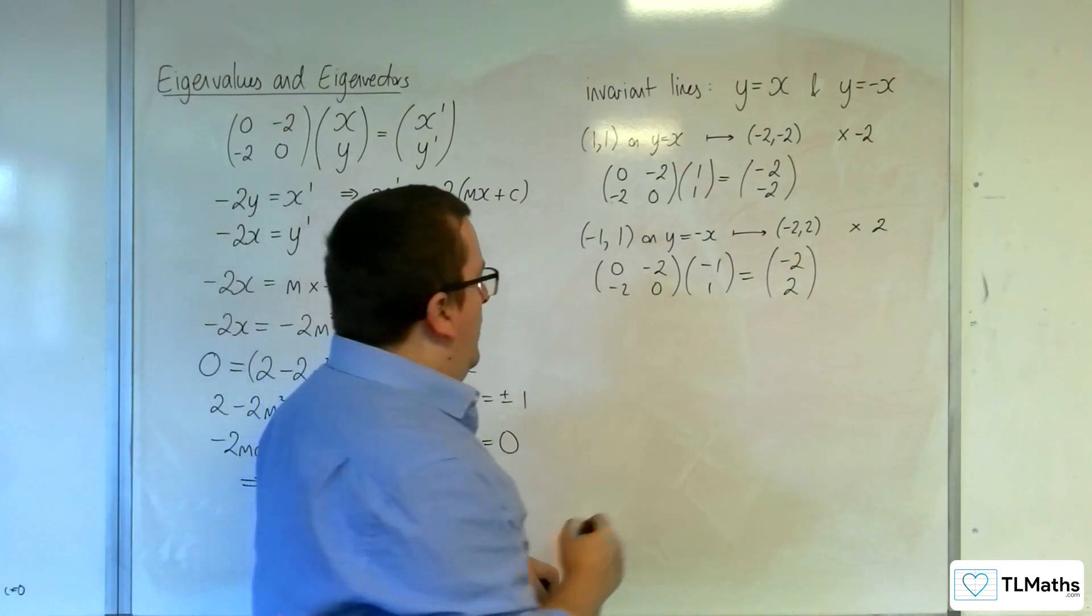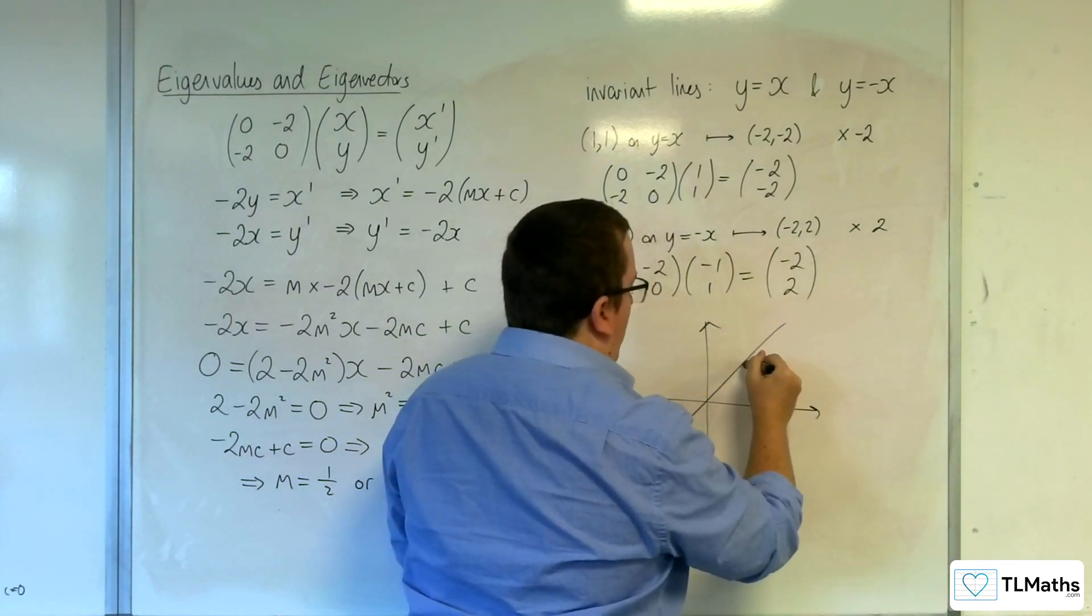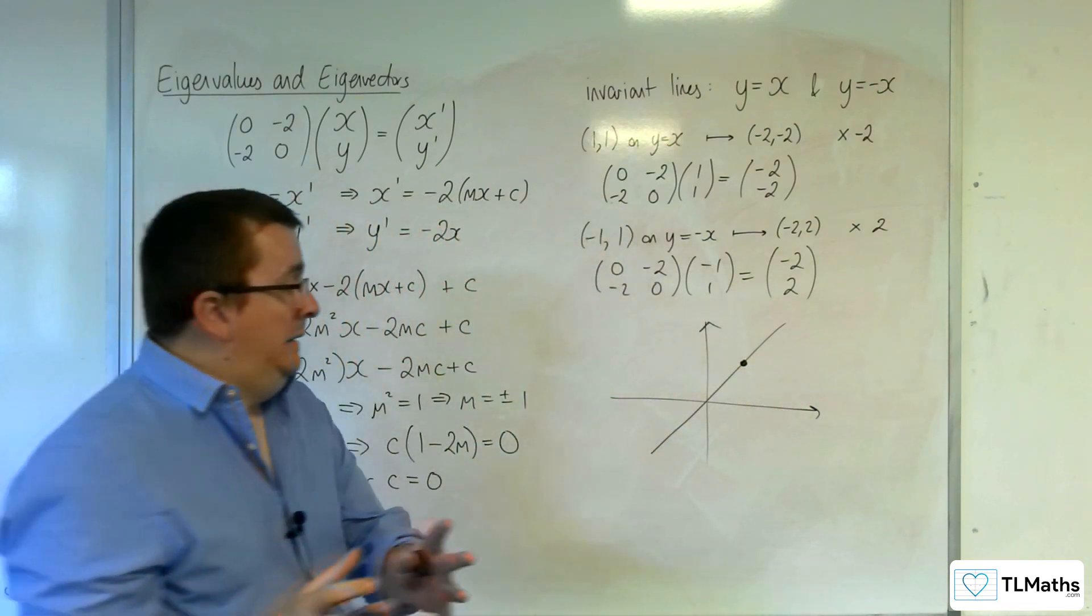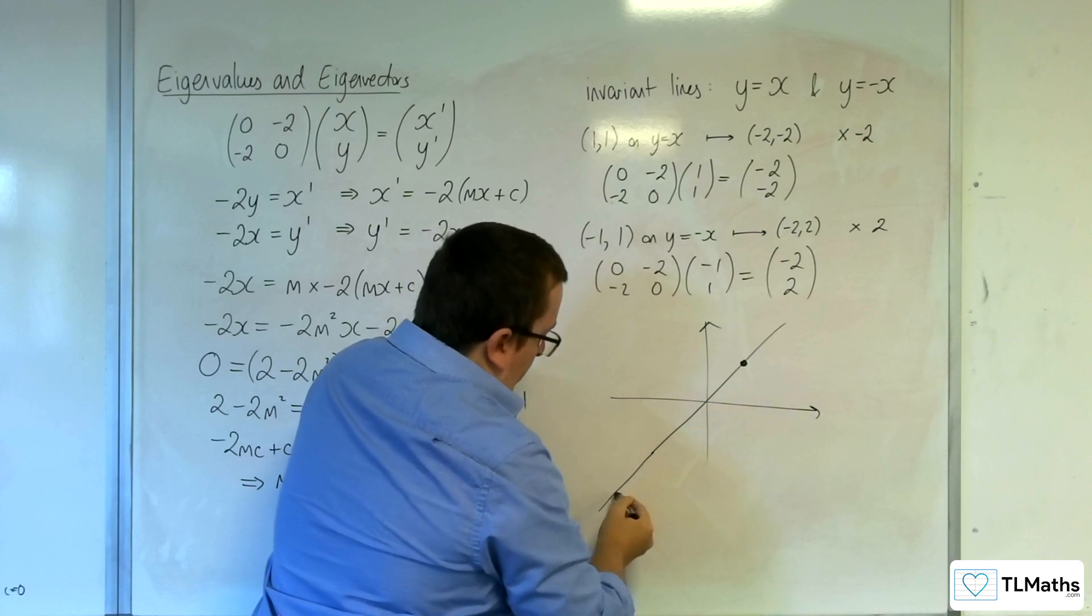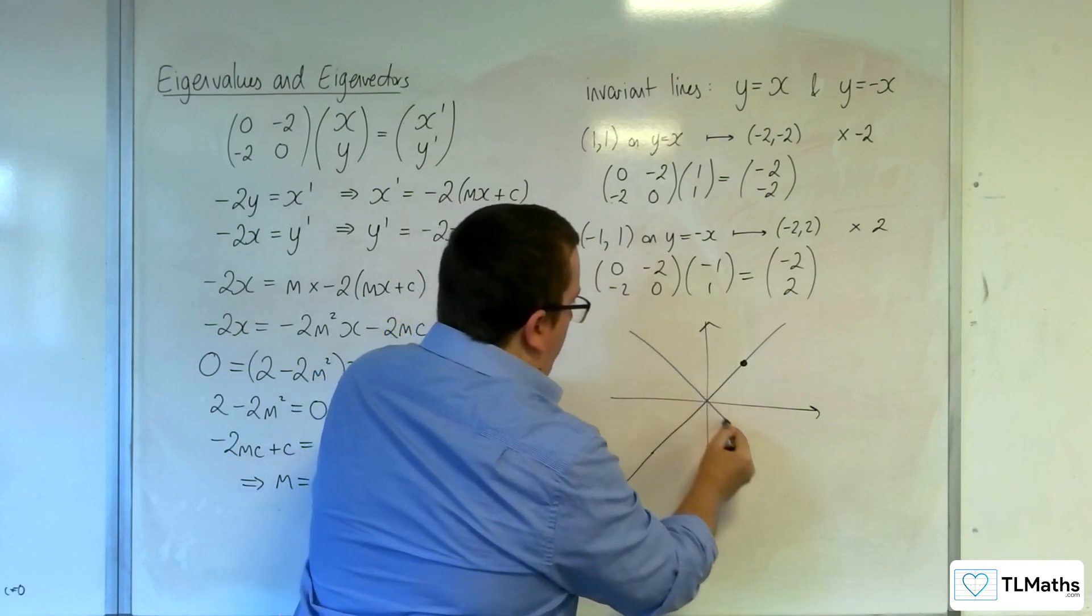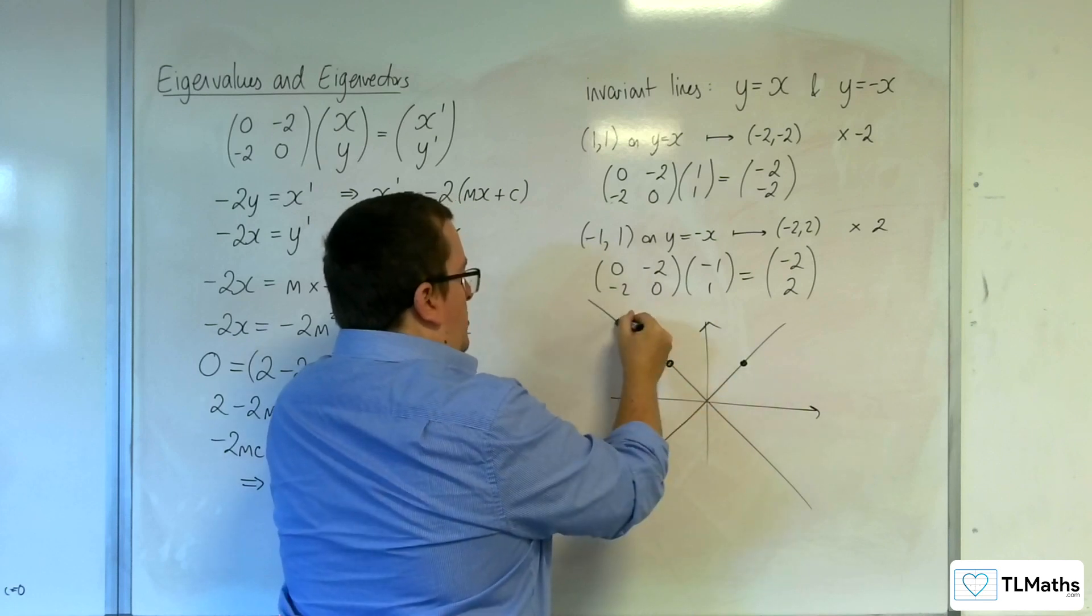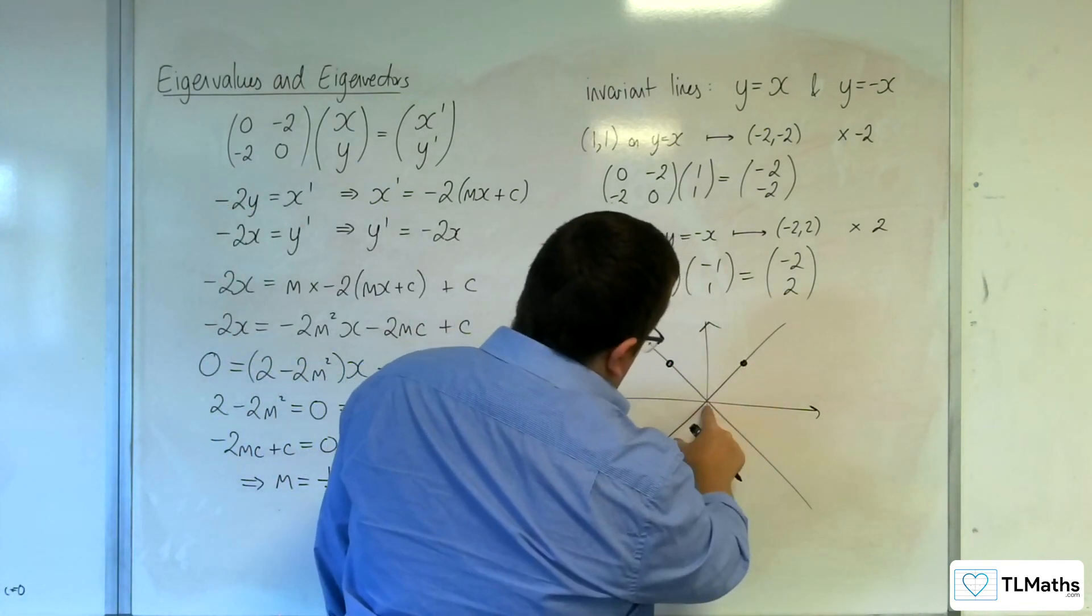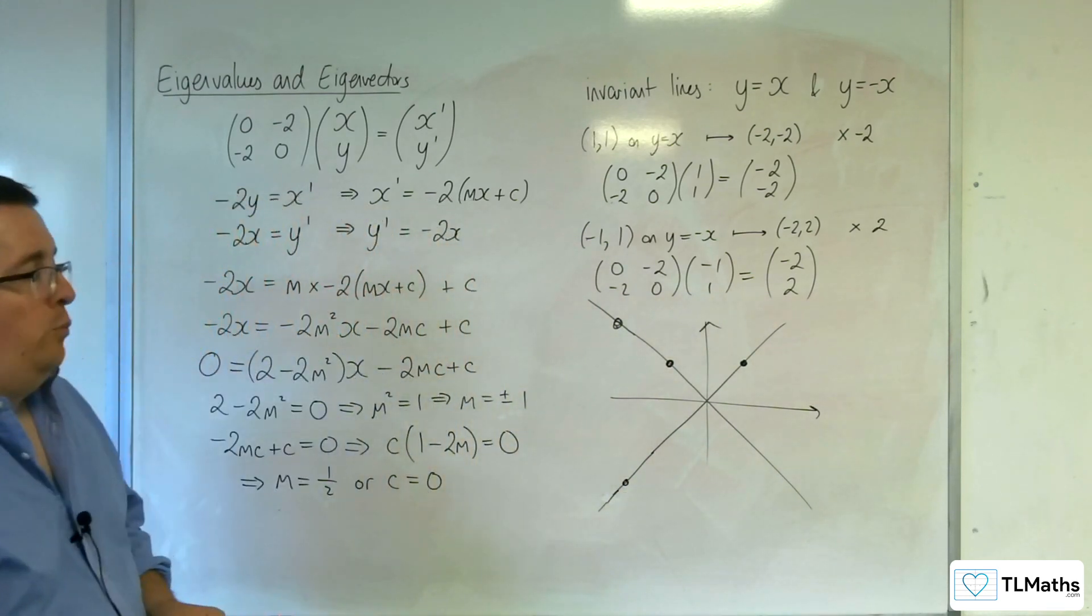So the idea is that if you've got a point that is on the y equals x line, say there, then what's happening is that it's staying on that line, but it's being multiplied by minus 2, so it's going down here. Whereas a point that is on y equals minus x, say this one, is actually just being multiplied by 2 and going up here.